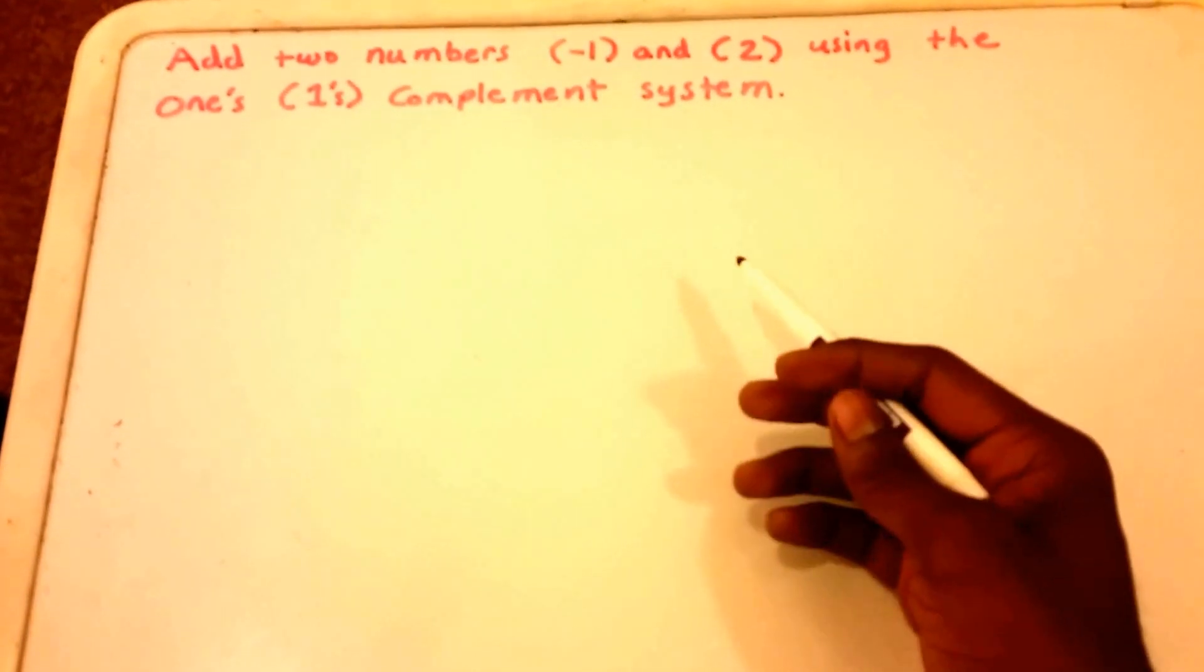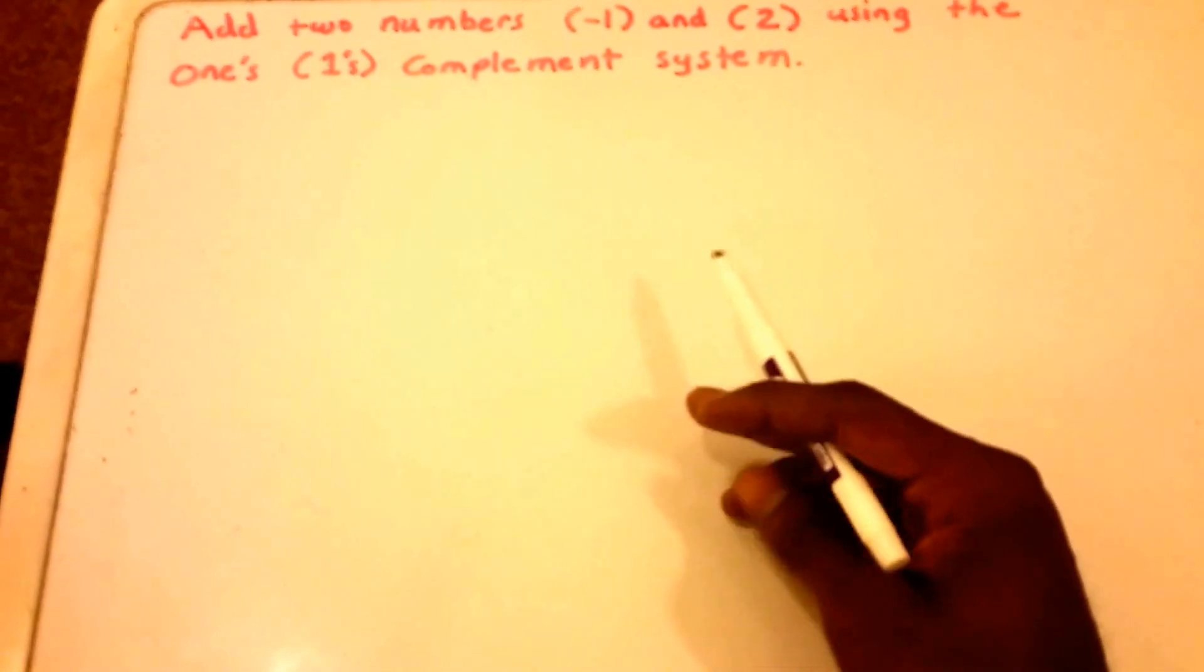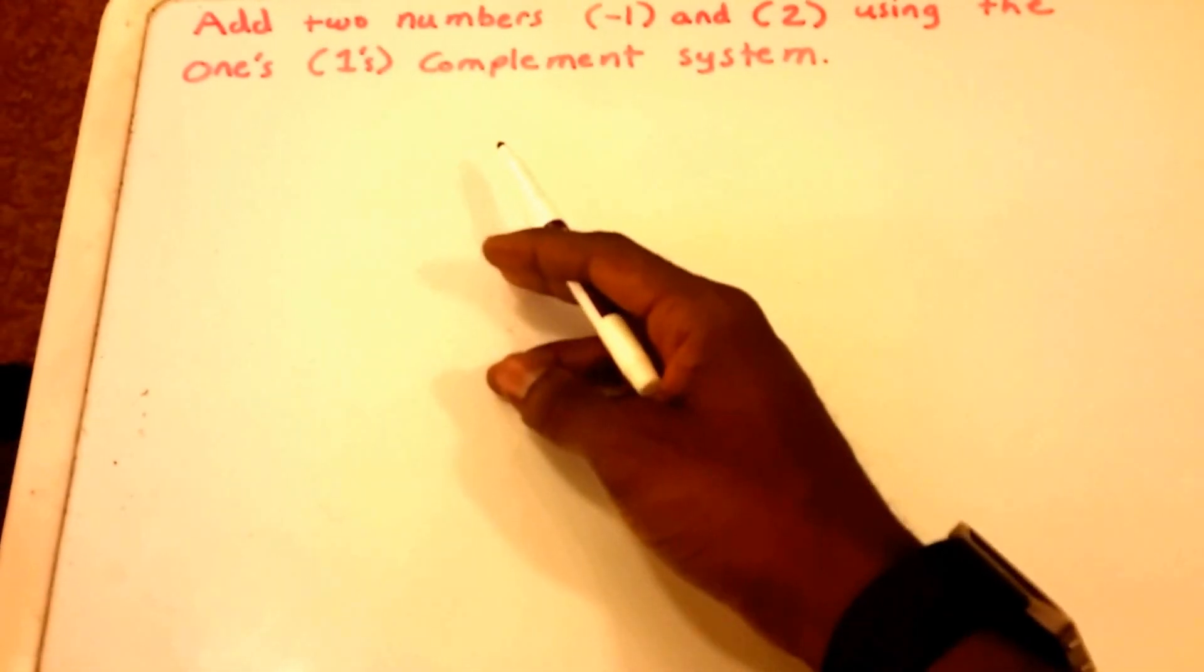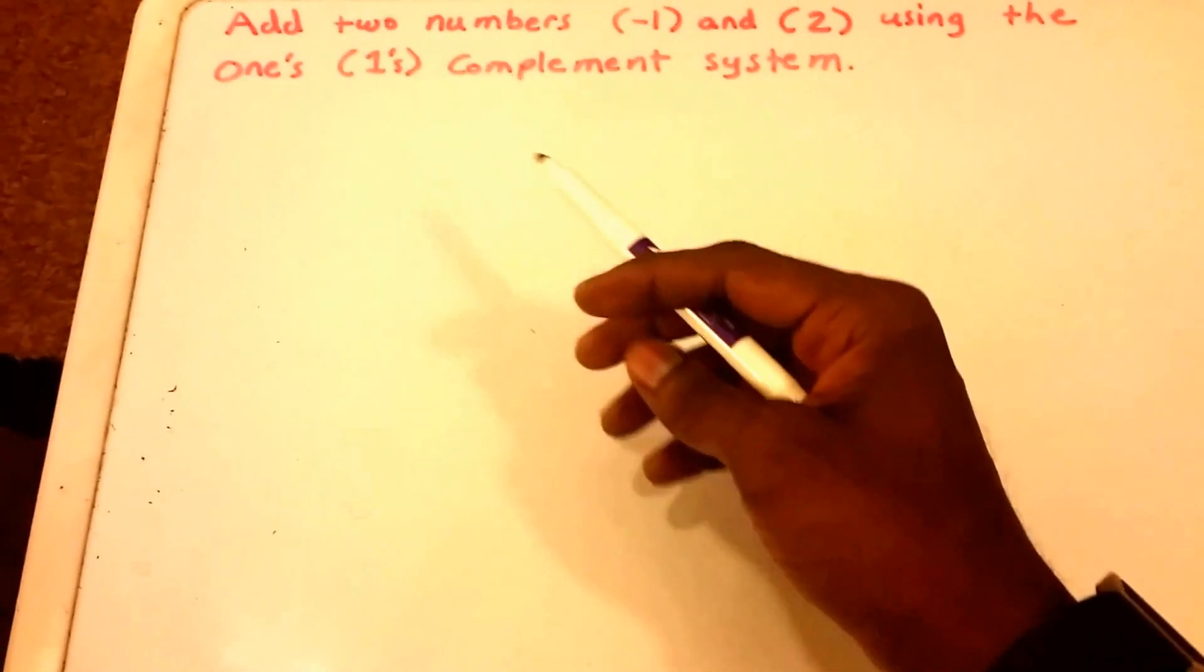Hey guys and welcome to this video on how to add two numbers using the one's complement system. Here we have our problem: add two numbers, negative one and two, using the one's complement system.